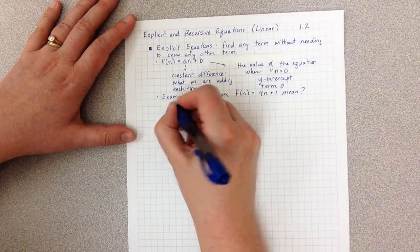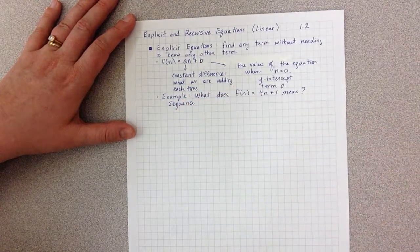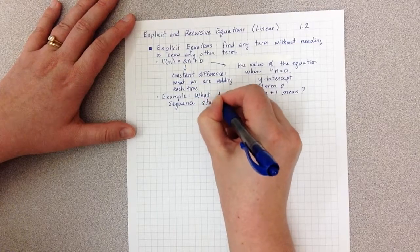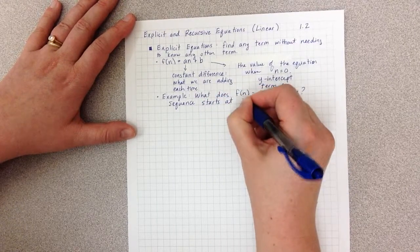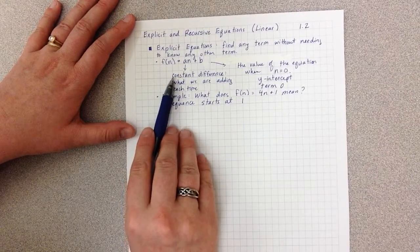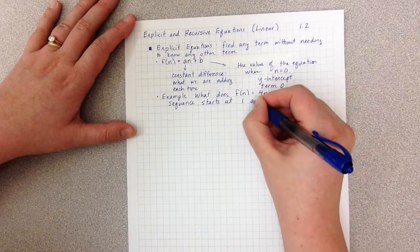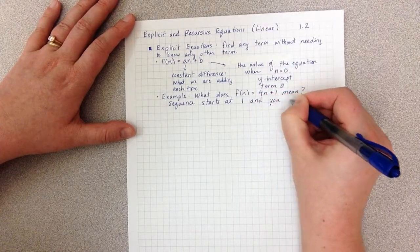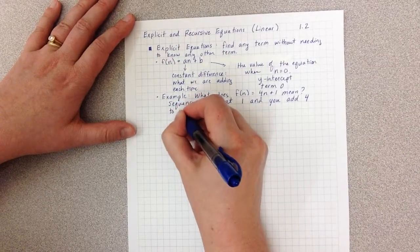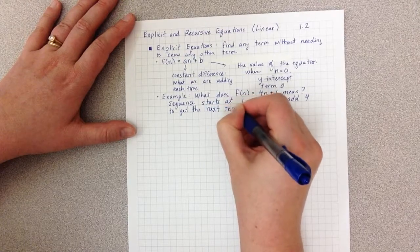So we might say that our sequence, which is what you're dealing with in this section, a list of numbers, starts at 1. And then remember the 4 is the constant difference, it's what we're adding each time. So the sequence starts at 1, and you add 4 to get the next term.